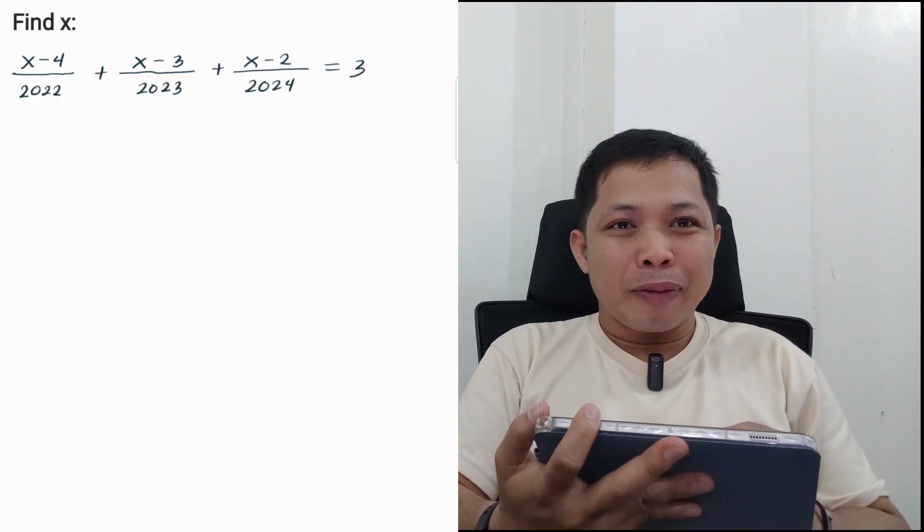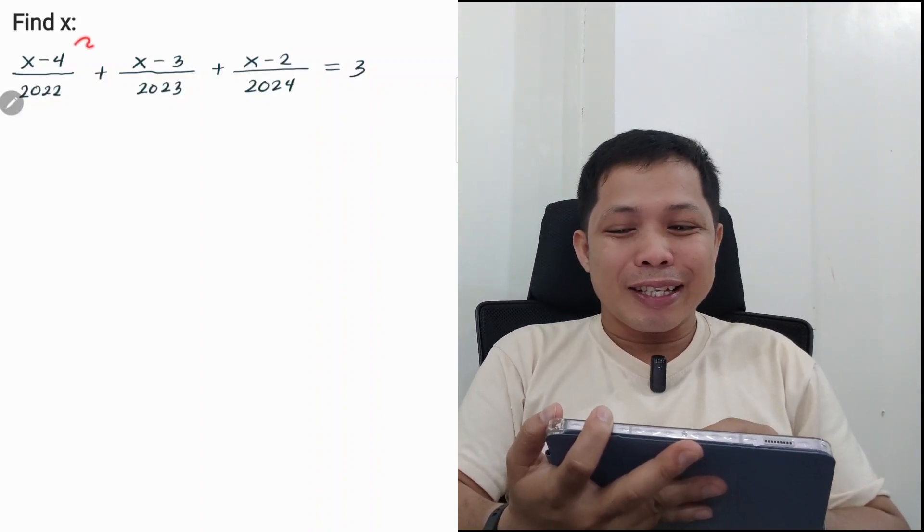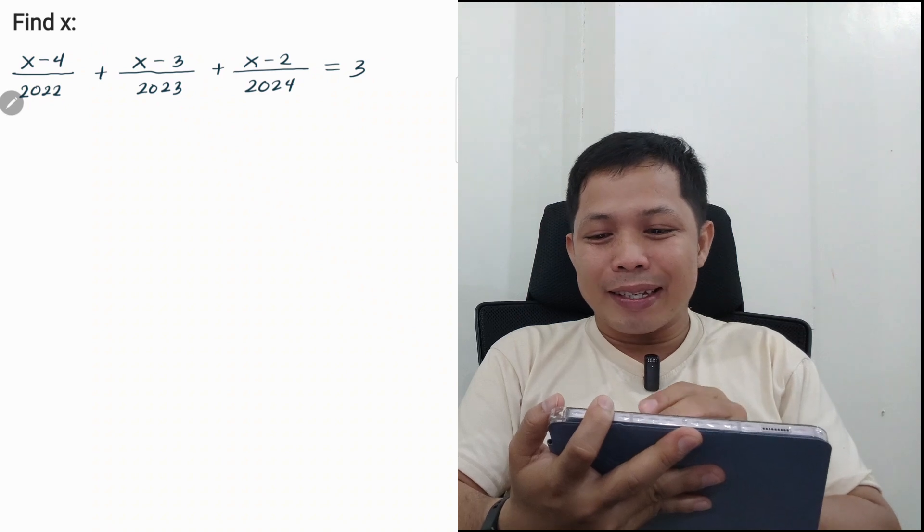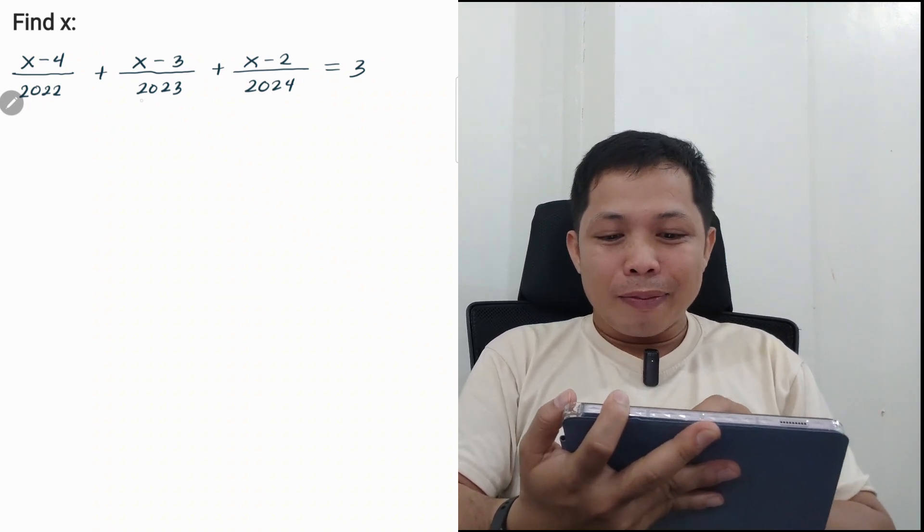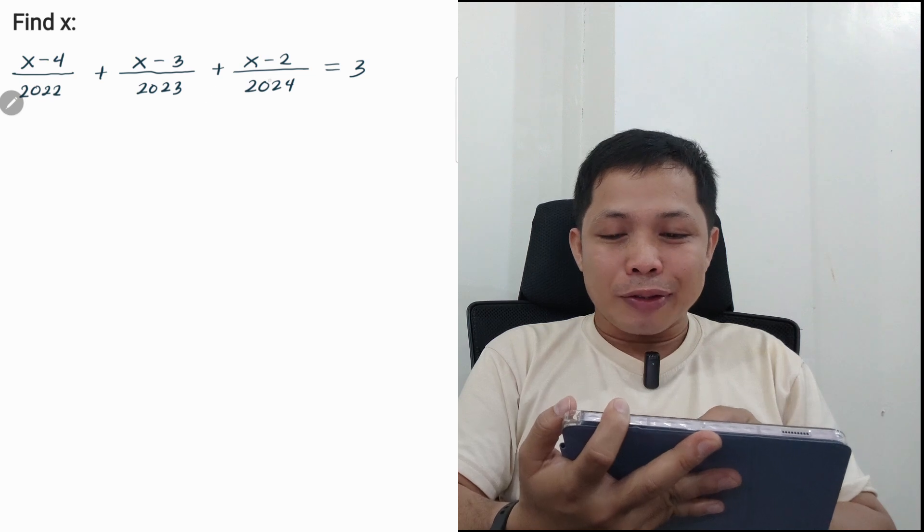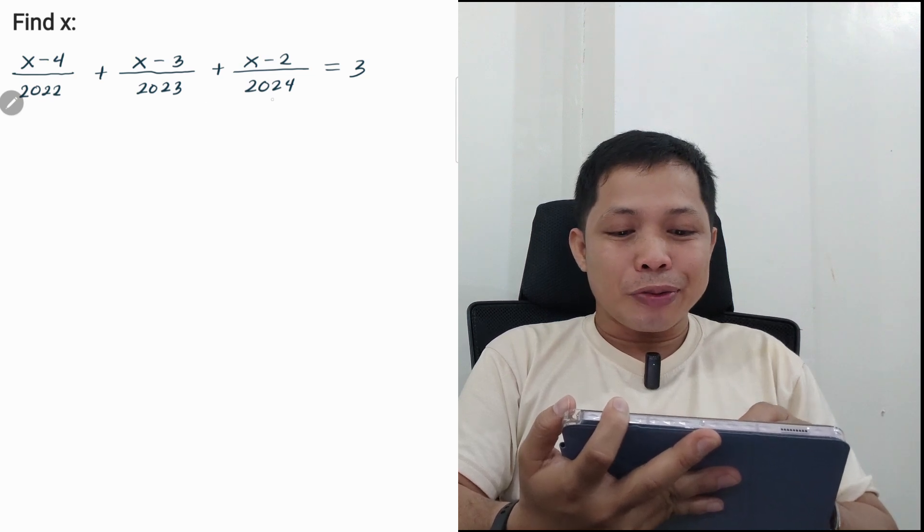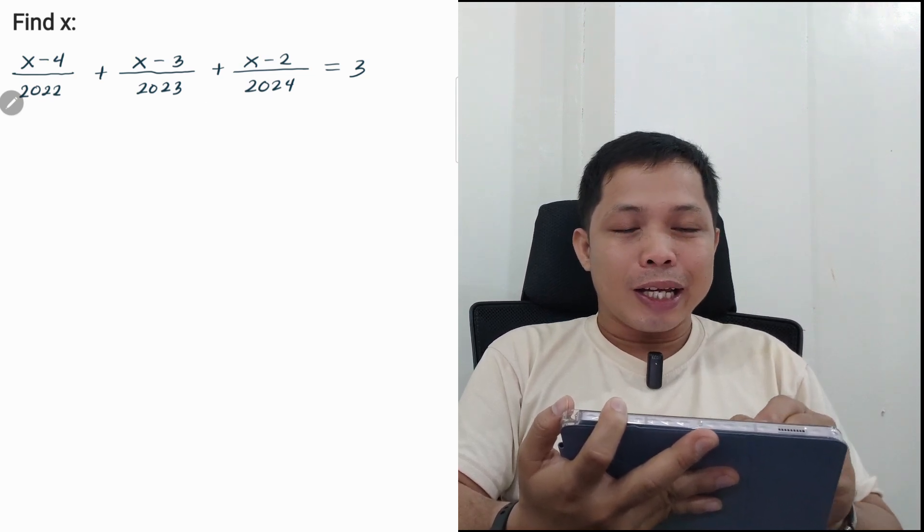Hi guys, so today we will be solving an equation. Here is the problem. Find x: (x - 4)/2022 + (x - 3)/2023 + (x - 2)/2024 = 3.